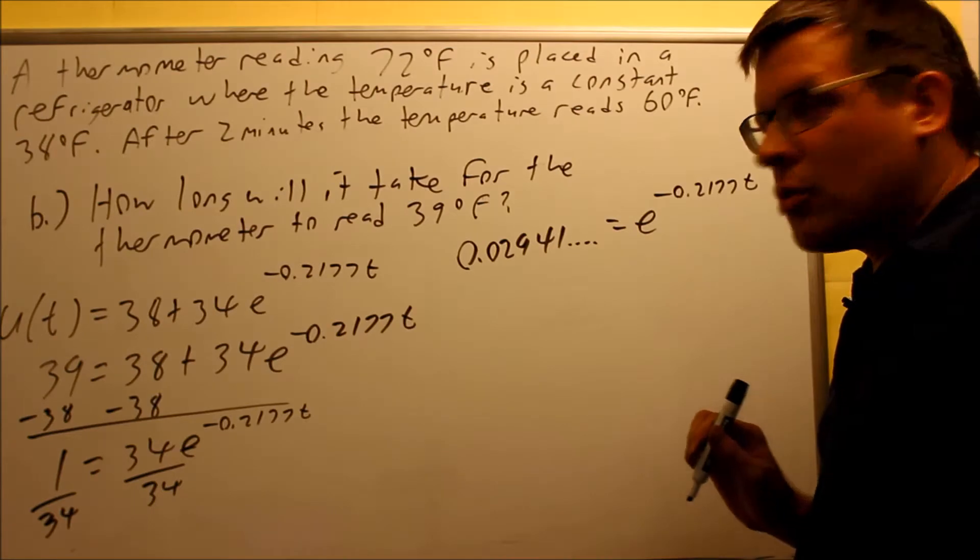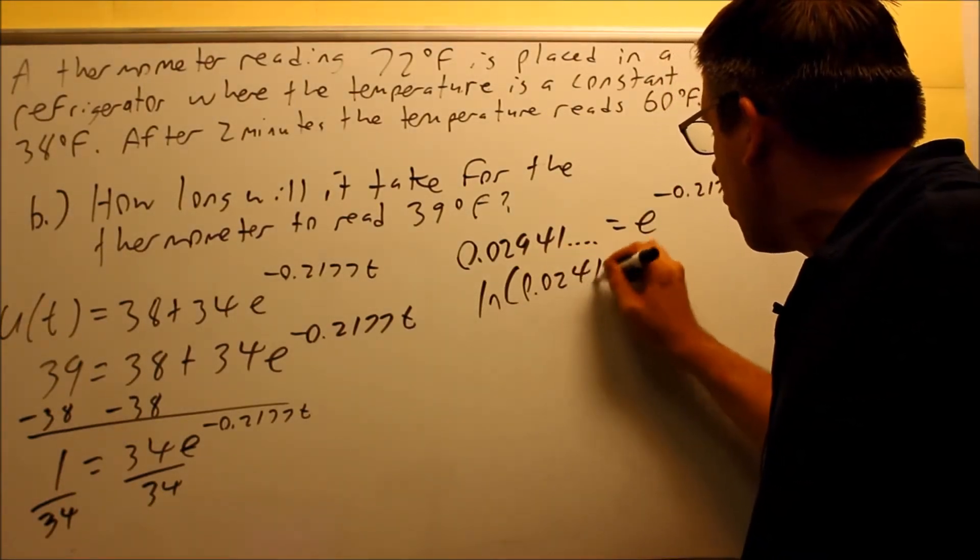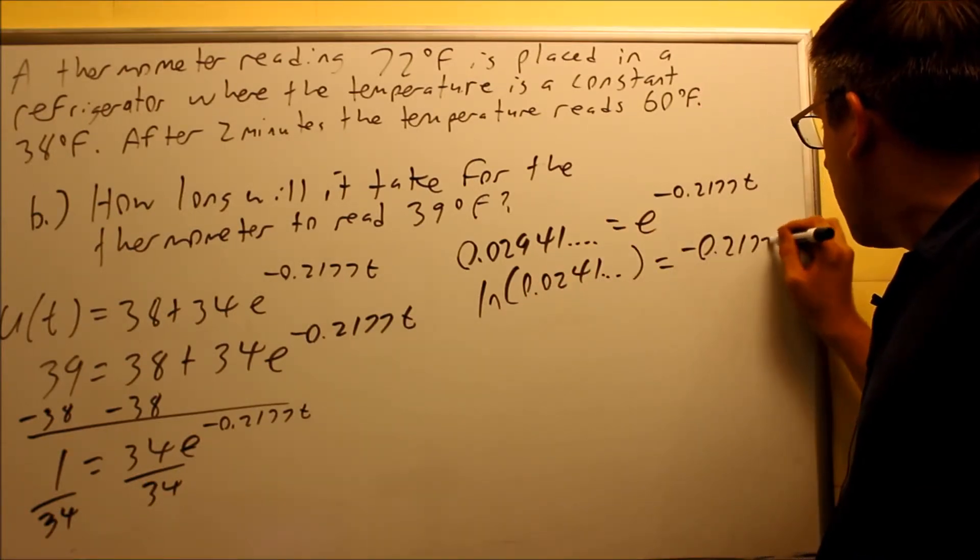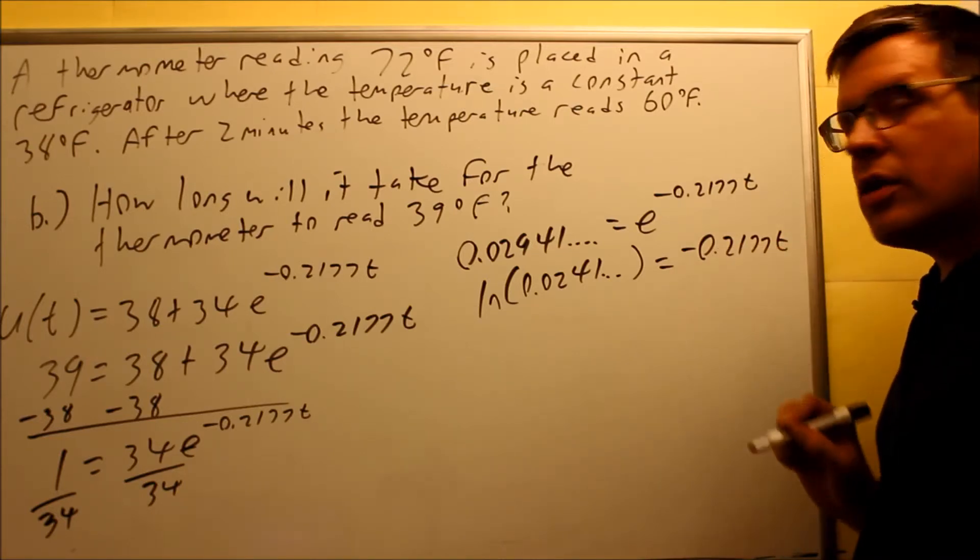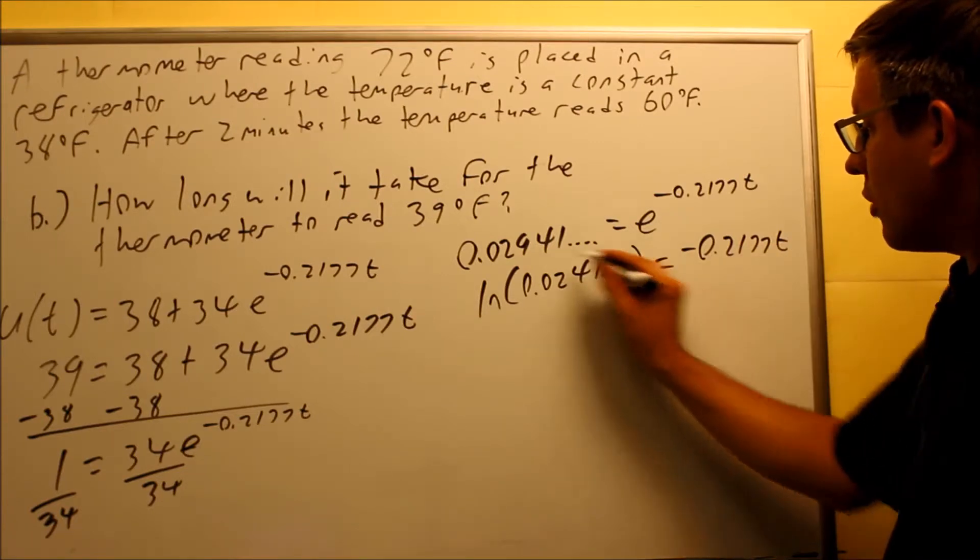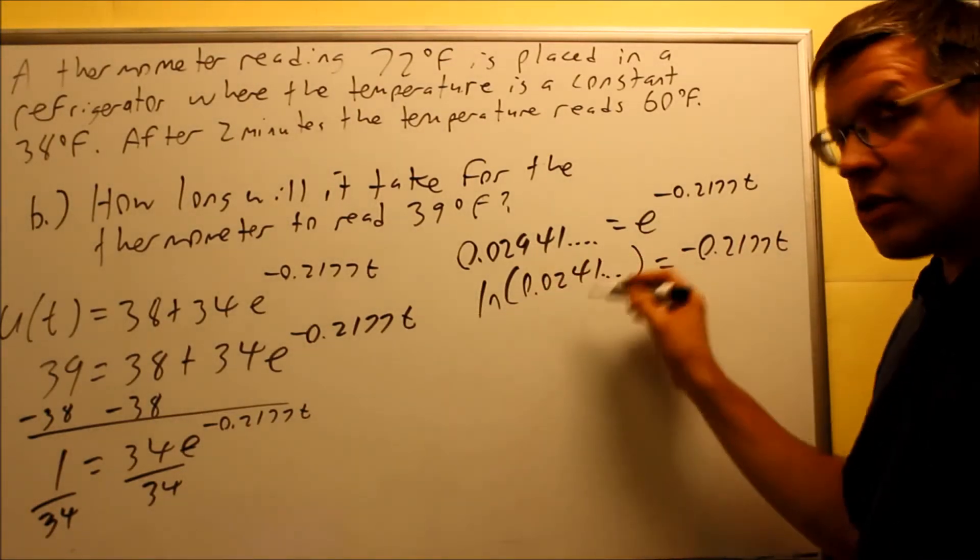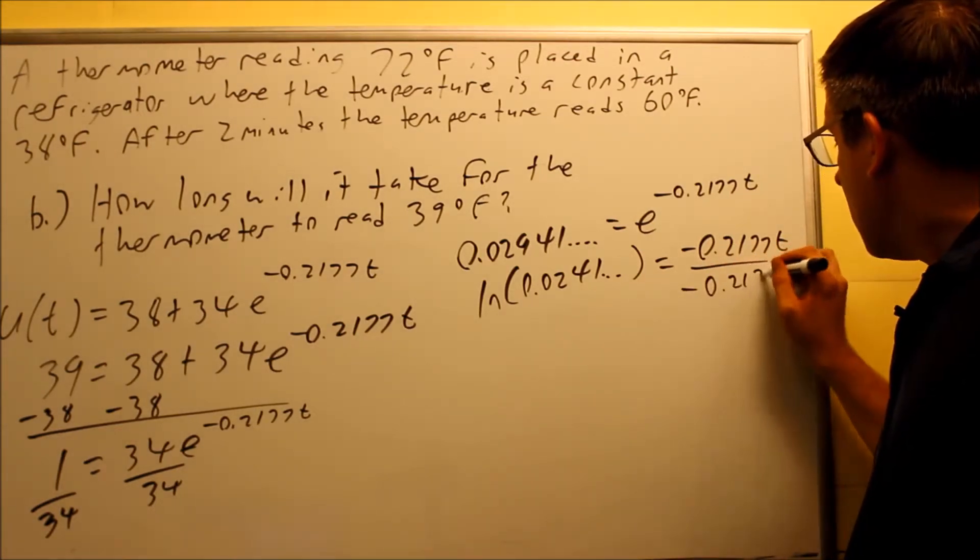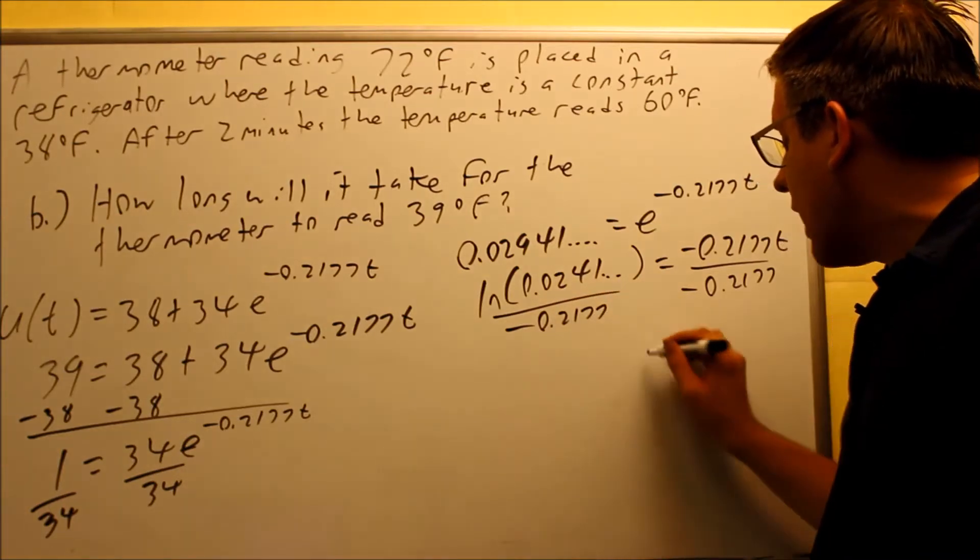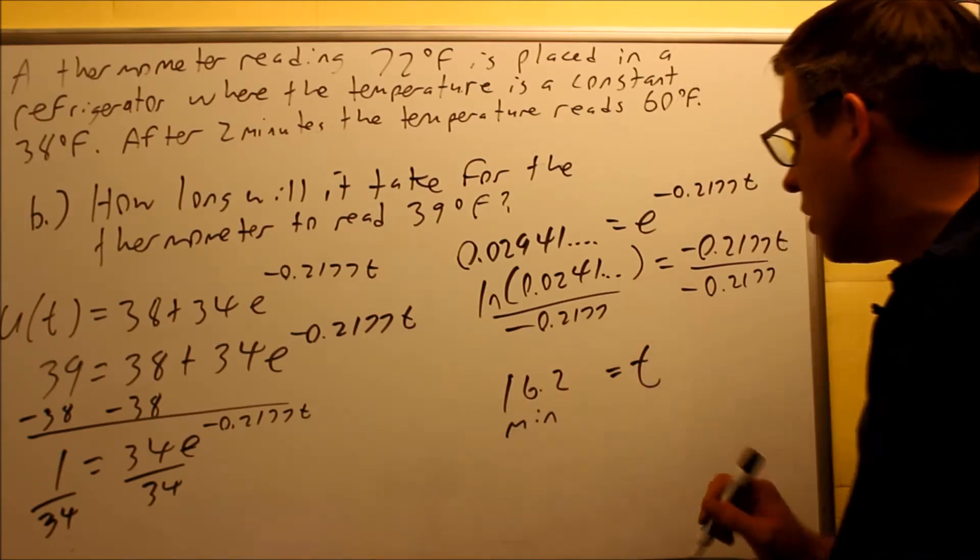Take the natural log of both sides to cancel out the e. Natural log of 0.0241 with more decimals equals just the exponent part only, negative 0.2177t. Divide both sides. Keep that whole entire decimal in your calculator, take the natural log and then divide by negative 0.2177. You're going to get your answer for the time, which is 16.2 minutes.